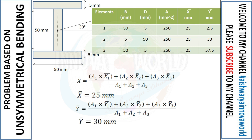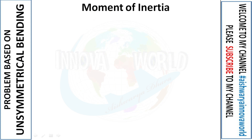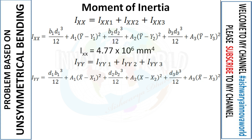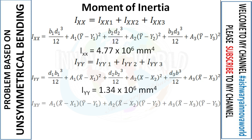Next, we find the moments of inertia: Ixx, Iyy, and Ixy. Substituting values into the Ixx formula gives 4.77 × 10⁶ mm⁴. For Iyy, substituting gives 1.34 × 10⁶ mm⁴. For Ixy, after substituting the values we get 0, because when Ixy = 0 it confirms the section is symmetric. For exam purposes, you can directly write Ixy = 0 since the section is symmetric.